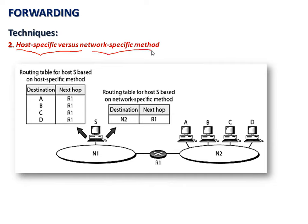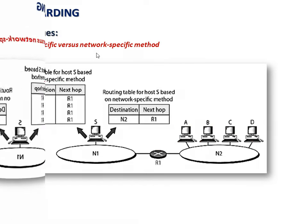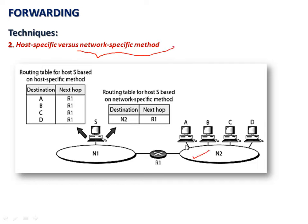The next technique is host-specific versus network-specific method, where the network-specific method simplifies routing table complexity. Network N1 and network N2 are connected with router R1, and the router should have information about the destination. Using the host-specific method, the router must contain information about all individual devices in network 2 — that is, devices A, B, C, and D. In the network-specific method, since the first IP in network 2 is the network address and the last IP is the broadcast address, the router only needs knowledge of network N2 and does not need to worry about the individual devices in that network.